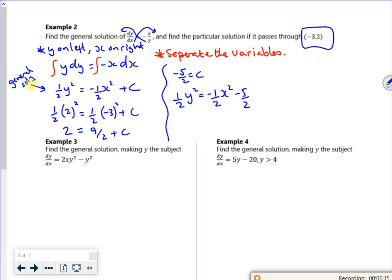Now what it might say for this particular solution, it might say in the form y squared is some function of x. So if I just multiply through by 2, there you go. Job done. All done.